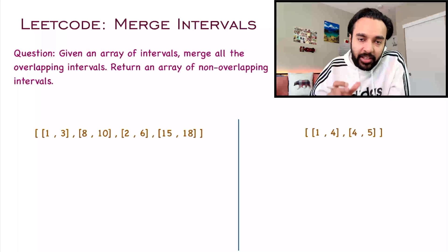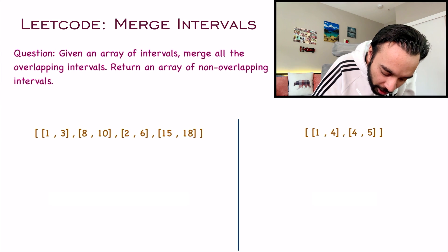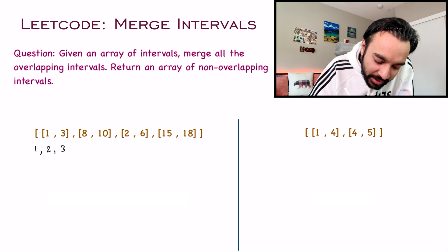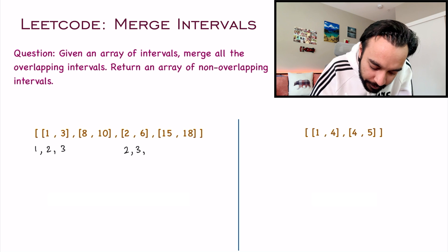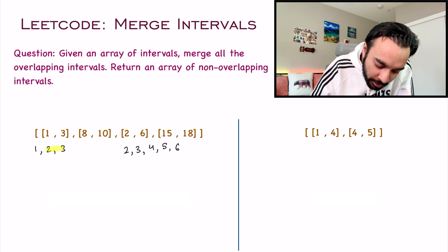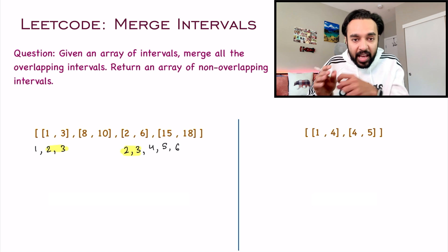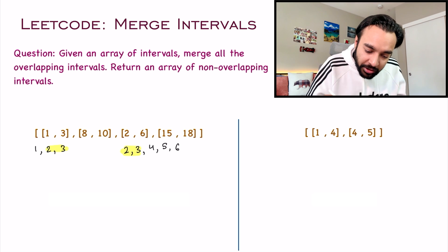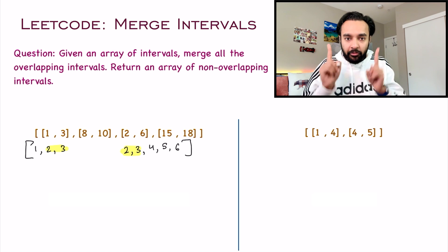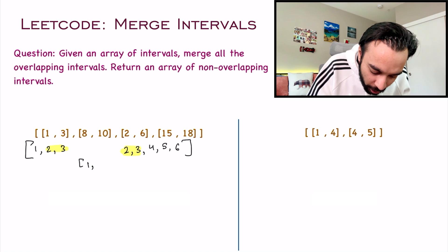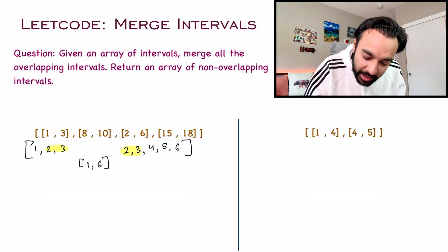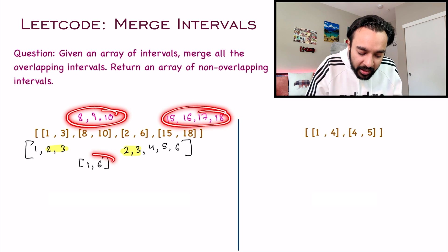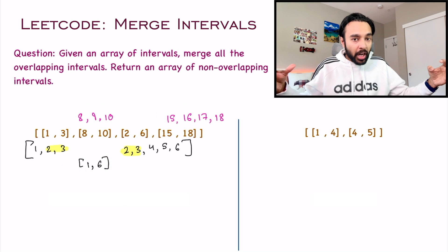So what do these intervals actually mean? For example, the interval 1,3 simply means that you have elements 1, 2, 3 inside it. And then the interval 2,6 simply means that you have all of those elements. If you notice, elements 2 and 3 exist in both of these intervals, so technically you can merge them. And once you merge them, they become just one interval — you can write it as 1,6. Similarly, if you look at the other intervals, none of their elements are common, so you cannot merge them.